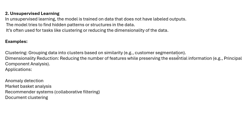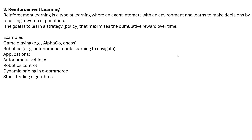In unsupervised learning, the model tries to find hidden patterns or structure in the data. It is often used for tasks like clustering and dimensionality reduction. Clustering groups data based on similarities; dimensionality reduction reduces the number of features while preserving essential information. Examples include anomaly detection and market basket analysis.